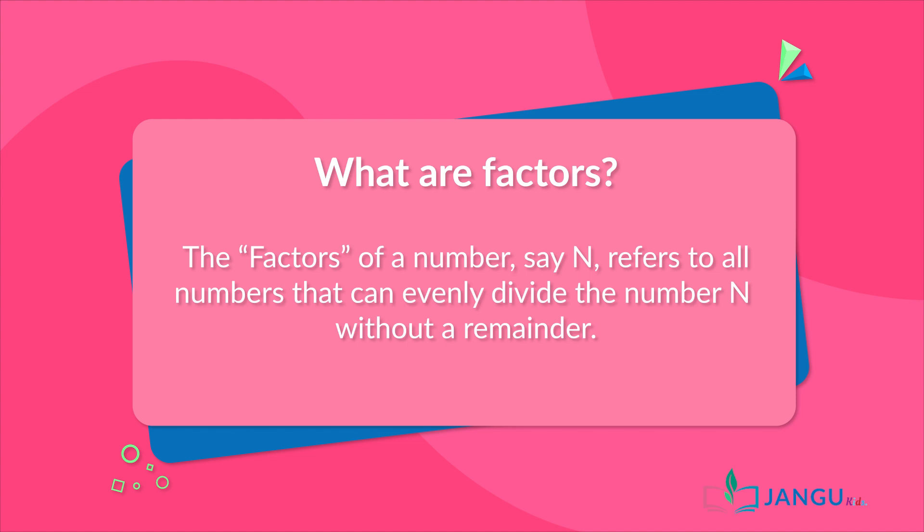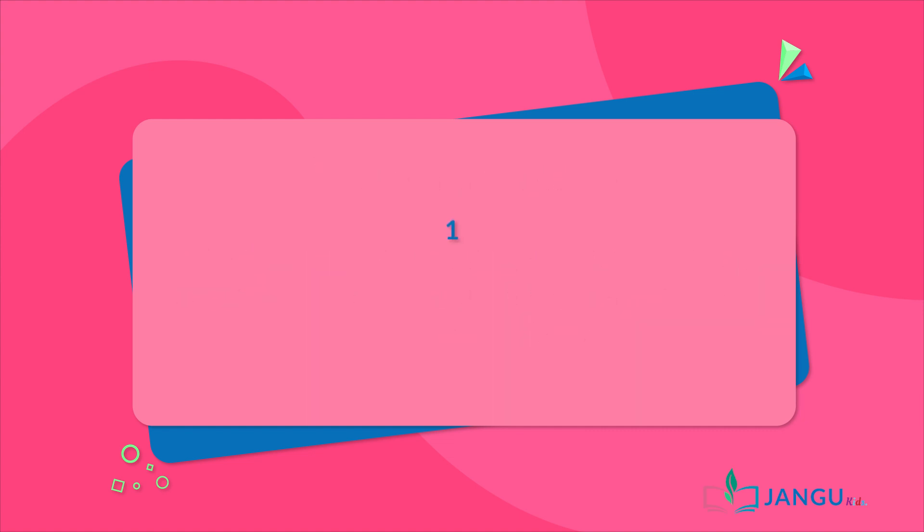The factors of a number, say N, refers to all numbers that can evenly divide the number N without a remainder. For example, the factors of ten are 1, 2, 5, and 10. If you check, you will notice that ten can divide all the listed numbers without any remainder.